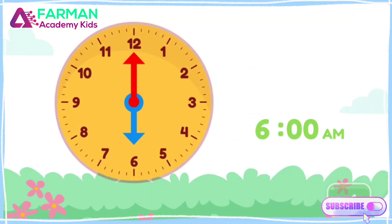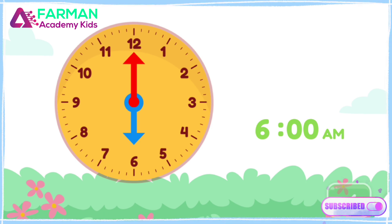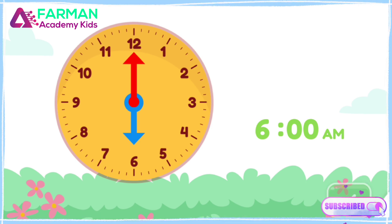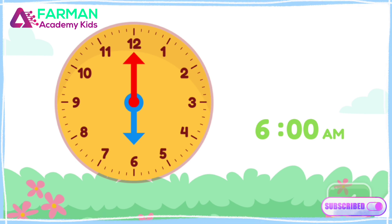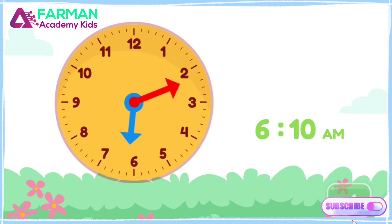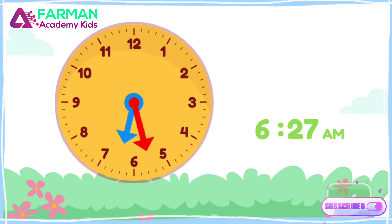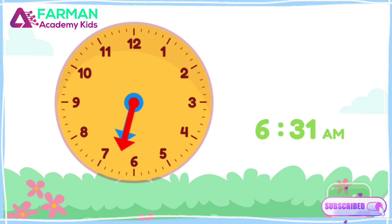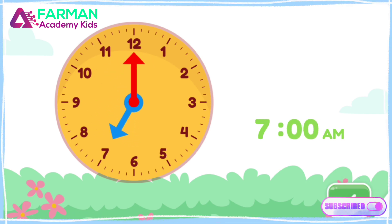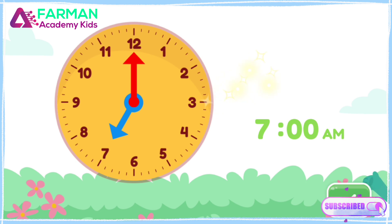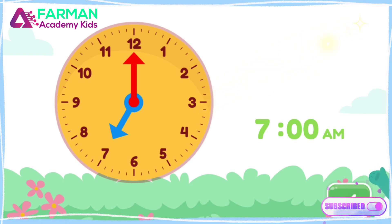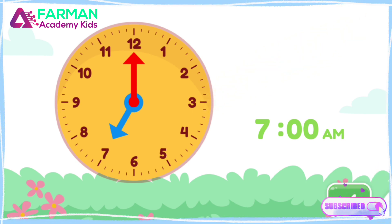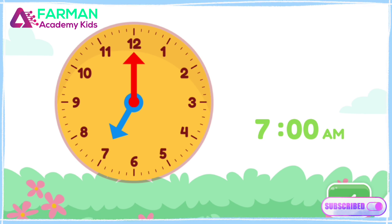Let's go through a typical day. Move the minute hand on the round clock to show 7 o'clock a.m. This is when I wake up. You made the clock show 7 o'clock a.m. That's a great time to wake up in the morning.